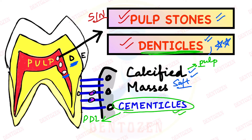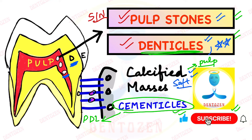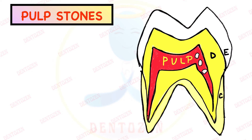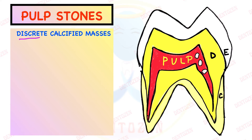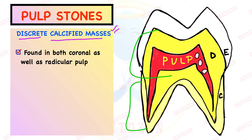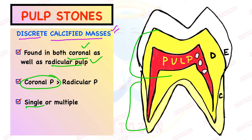So the topic for today's video is pulp stones, or denticles. Let's see how to write for your exam. They are discrete calcified masses in the pulp. They can be seen both in the crown portion as well as the root portion — so in both coronal and radicular pulp — but they are more common in the coronal pulp. They can be single or multiple; we can see a single calcification or there can be multiple calcifications.